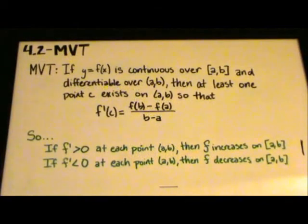An important concept in analyzing graphs is the mean value theorem, or MVT, which states that if y = f(x) is continuous over the closed interval [a,b] and differentiable over the open interval (a,b), then at least one point c exists on the open interval (a,b) so that f'(c) equals (f(b) - f(a))/(b - a). This concept should be familiar from our previous section and will not be covered in this video.